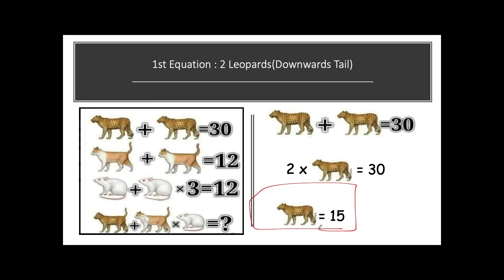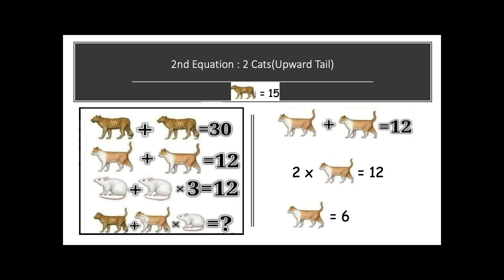Moving onwards and solving our second equation: we have got two cats with upward tails and their sum is equal to 12. So 2 × cat = 12, giving one cat value equal to 6. By the end of the second equation we have: one Leopard = 15 and one cat = 6.